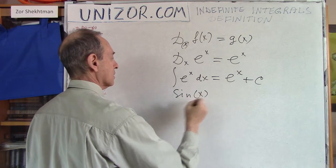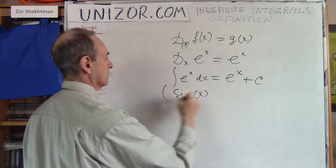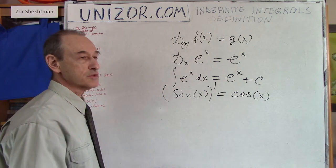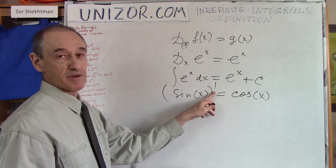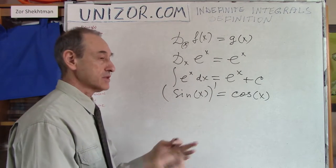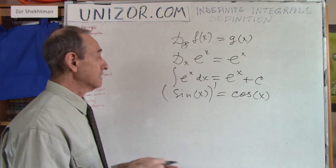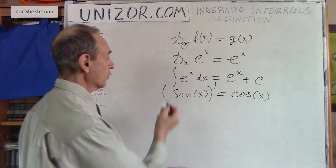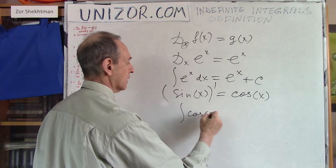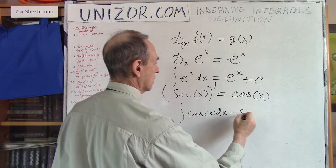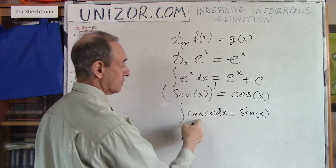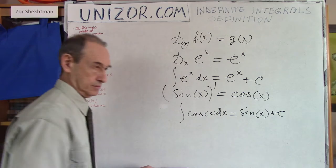Next example: the derivative of sine(x) equals cosine(x). I'm using various notations for derivative — d/dx of f(x), or the prime symbol f'(x), or using the index notation. Integral notation has only one form. As a consequence: the integral of cosine(x) dx equals sine(x) plus C, since the derivative of sine is cosine.